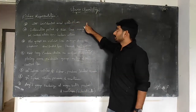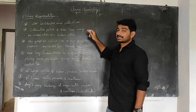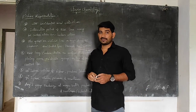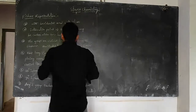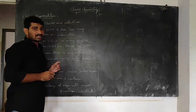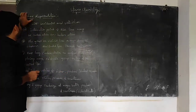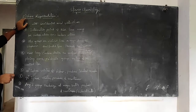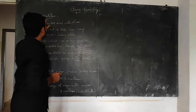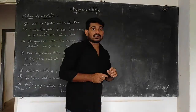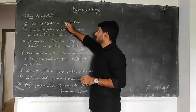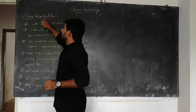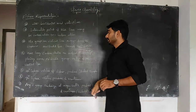In the previous lecture, we discussed molecular representations. There are five different types of molecular representations. The second type is Fischer representation — how a three-dimensional molecule is represented in a two-dimensional plane using Fischer projection.